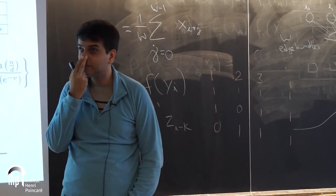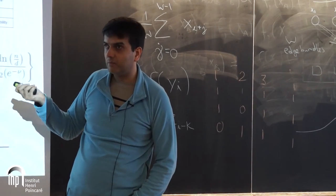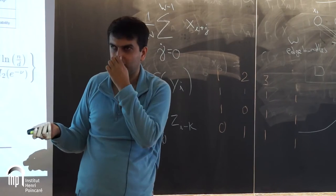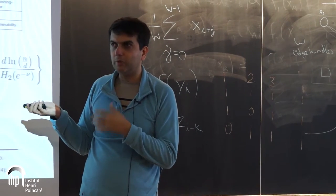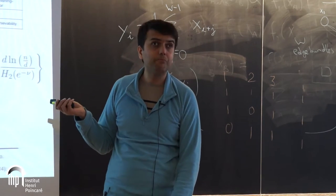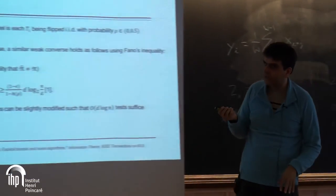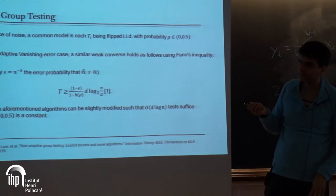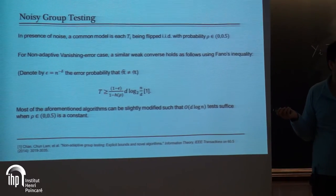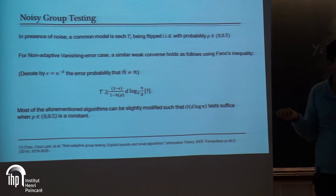Let's move on with about 12 minutes left. I'll now briefly talk about a bunch of other related models. Even if you have noise, the information theoretic bound becomes something like d log(n/d) divided by capacity. Several algorithms I mentioned earlier are also robust to noise — for example, the maximum likelihood estimator based on the integer program can be analyzed for different noise parameters, and in some regimes achieves the information theoretic bound.